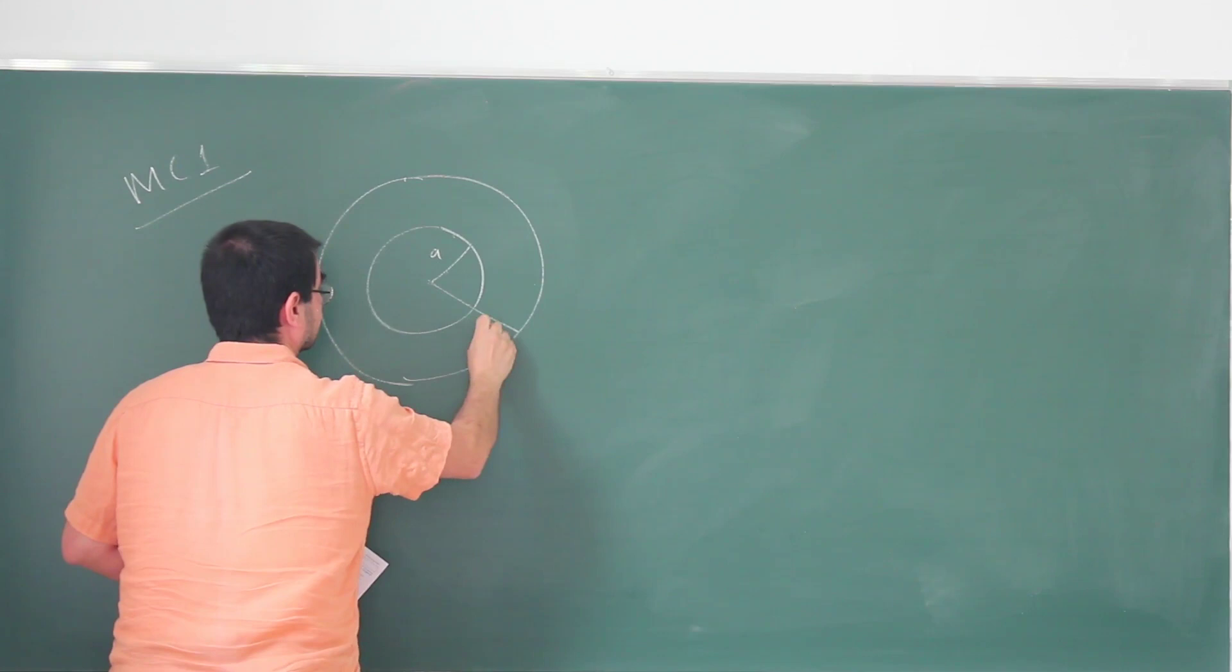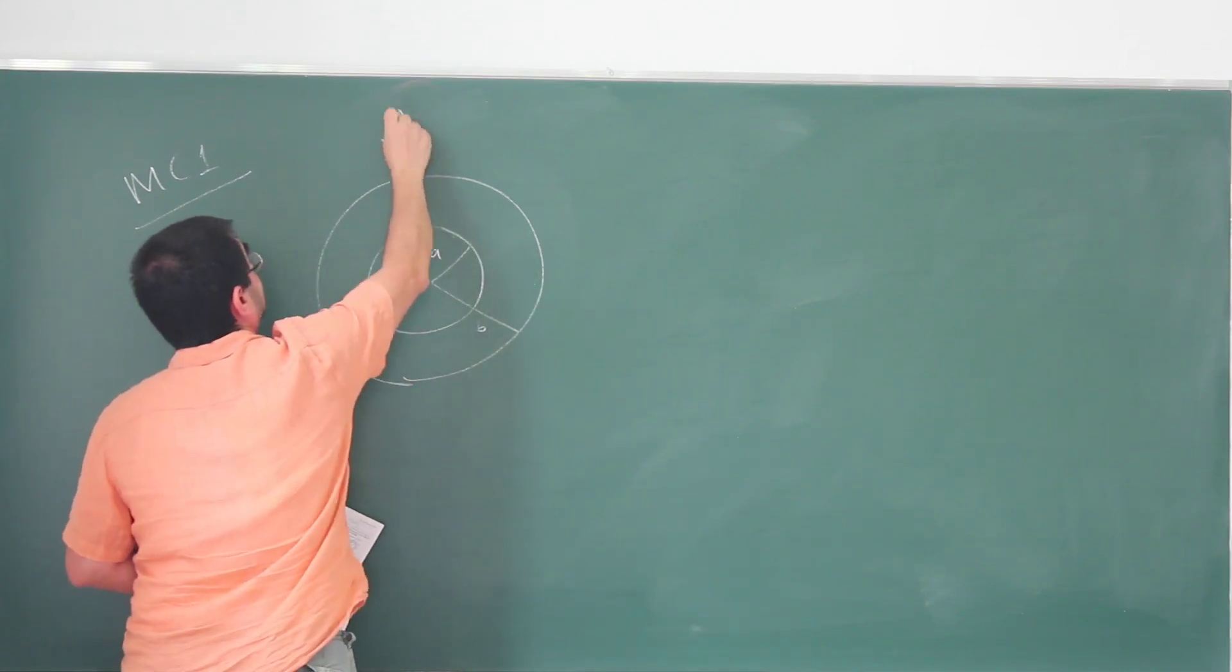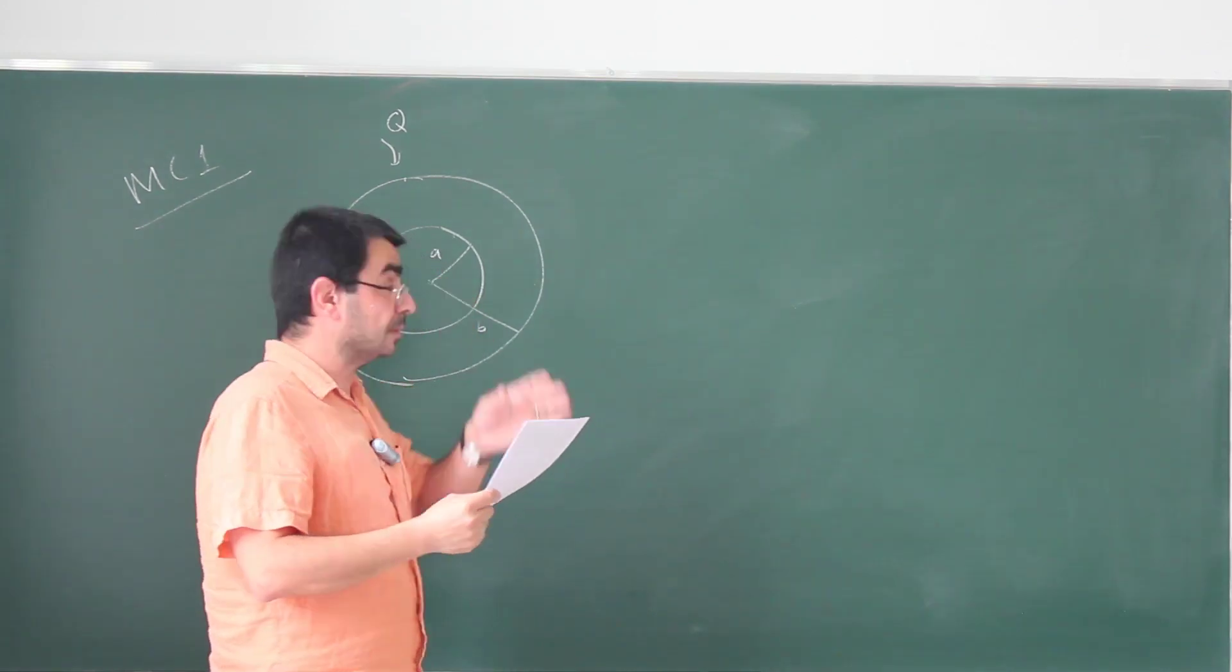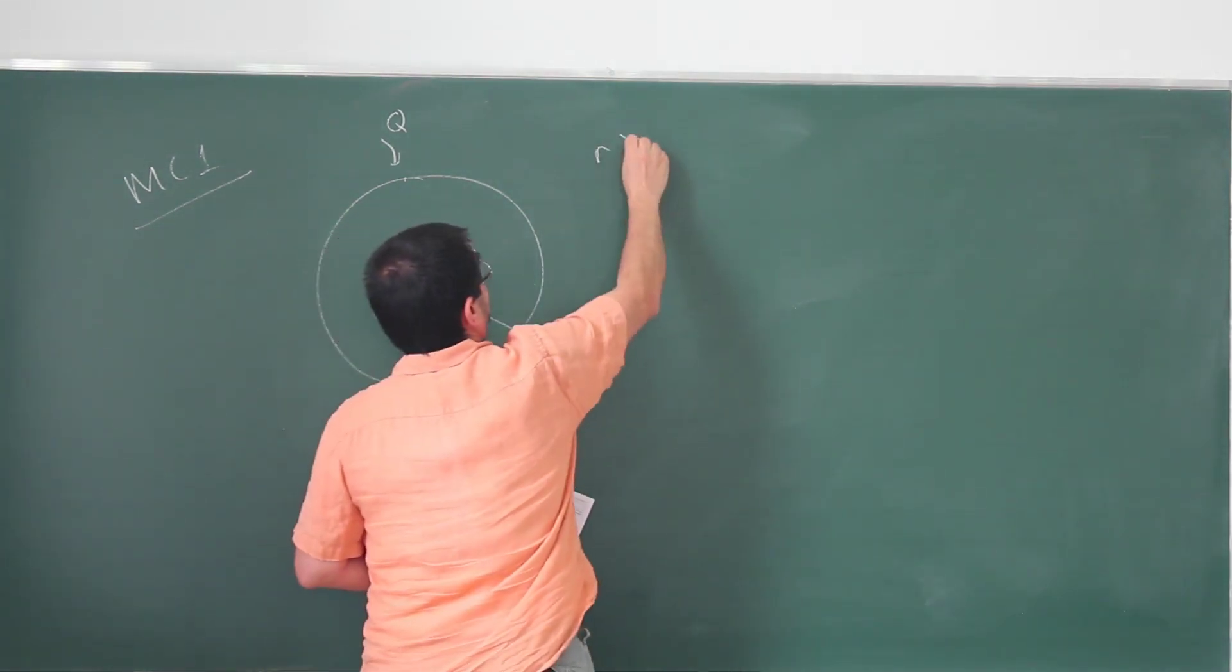They give you the inner and outer radii, and they tell you the total charge on this is Q. They're asking for the electric field for some point outside this shell.